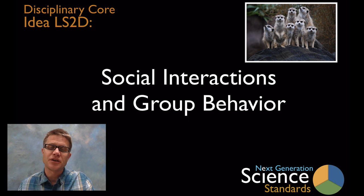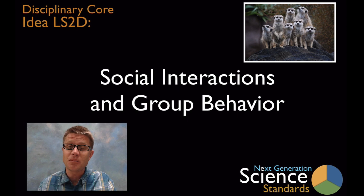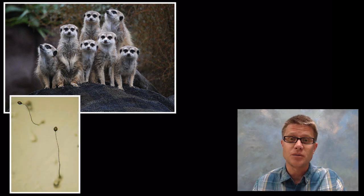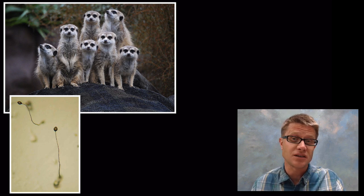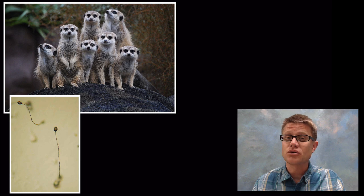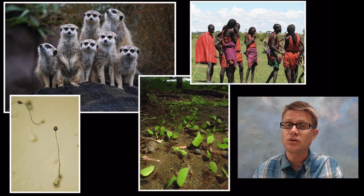Hi. It's Paul Anderson and this is disciplinary core idea LS2D on social interactions and group behavior. One of my favorite organisms is the meerkat, probably because they are very cute, but they also show social interactions very similar to humans. They're incredibly intelligent and they work together as a family group. But you don't have to be a meerkat to work socially. Even simple organisms like slime mold and leaf cutter ants show social behavior. And we do as well.